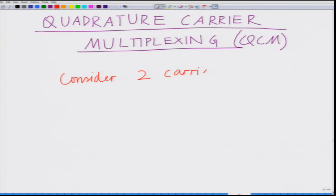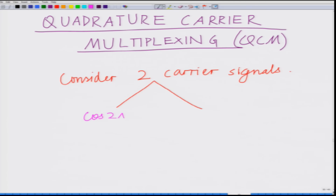For this purpose, consider the two carrier signals: cosine(2π·fc·t), which is the standard carrier signal at carrier frequency fc, and also sine(2π·fc·t). These are our two carriers, and fc as usual is the carrier frequency.